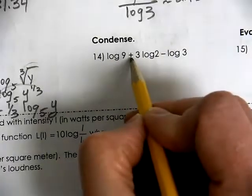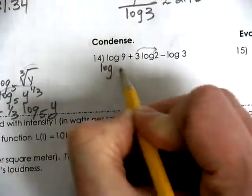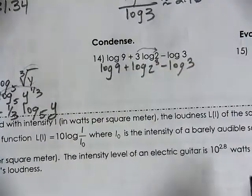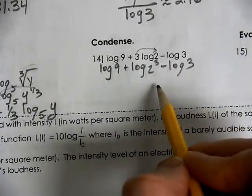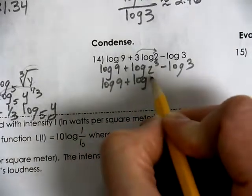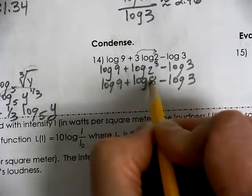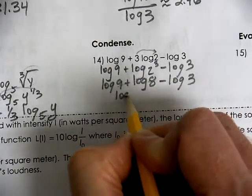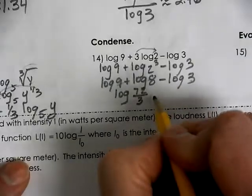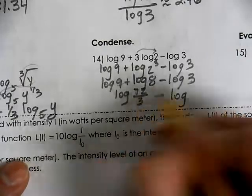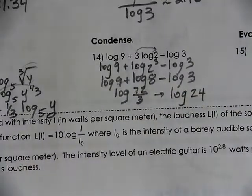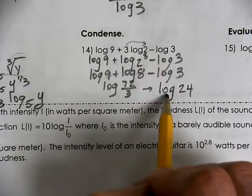For condensing log 9 + 3 log 2 − log 3: first apply the power property — 3 log 2 becomes log of 2³ which is log 8. Using the addition: log 9 + log 8 = log 72, then log 72 − log 3 = log(72/3) = log 24.